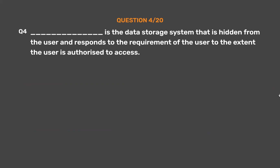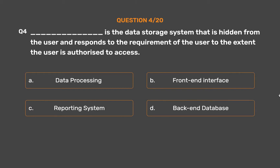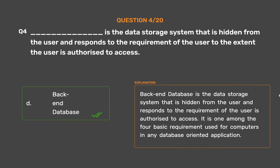Question number 4. __ is the data storage system that is hidden from the user and responds to the requirement of the user to the extent the user is authorized to access. Option A: Data processing. Option B: Frontend interface. Option C: Reporting system. Option D: Backend database. The correct answer is Option D: Backend database. Backend database is the data storage system hidden from the user and responds to user requirements to the extent the user is authorized to access. It is one among the four basic requirements used for computers in any database-oriented application.